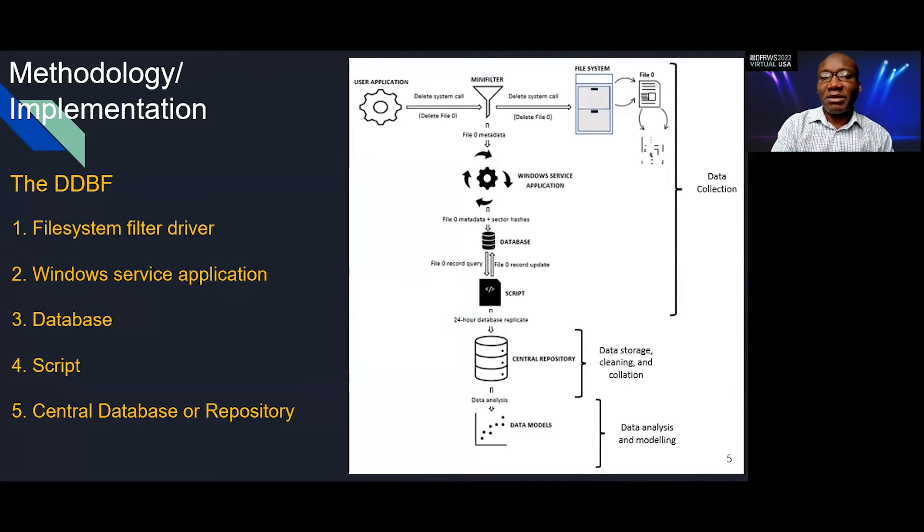This information is intercepted by the mini filter and then passed to the Windows service application. The Windows service application uses the addresses of the sectors occupied by the file to locate the position of the file on the disk, and then it computes hashes, MD5 hashes of the sectors of the file on disk, and then populates a database with this information. Once it's done with this, it tells the mini filter that it's done processing the file. The mini filter releases the delete system call, it gets to the file system, and then the file system deletes the file.